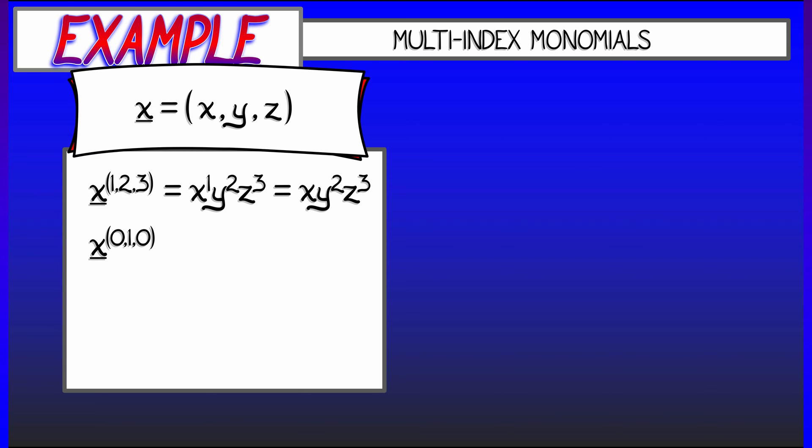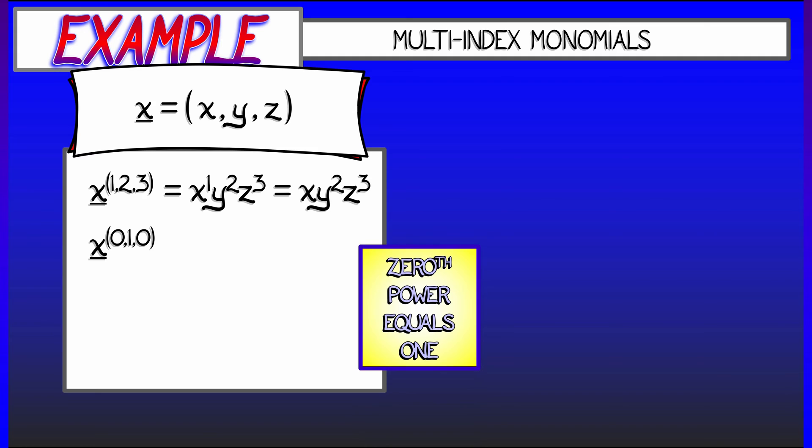Okay, what's x to the (0, 1, 0)? Well, remember, what does it mean to take something to the 0th power? That variable just goes to 1. So x to the 0, y to the 1, z to the 0 is simply y. That's really clean. Likewise, x to the (1, 0, 1) turns out to be simply x times z.